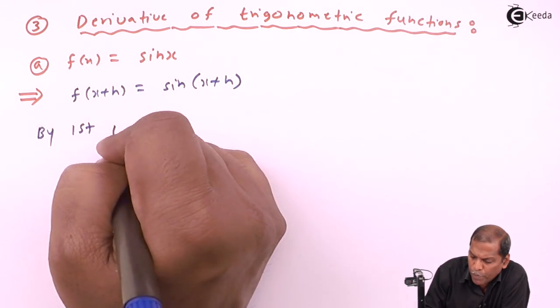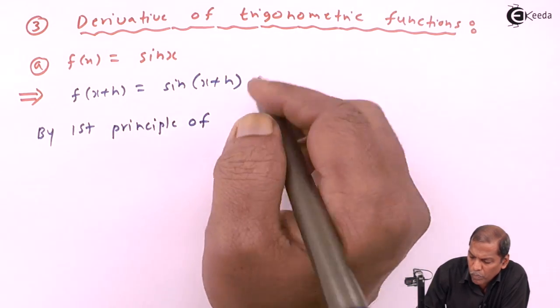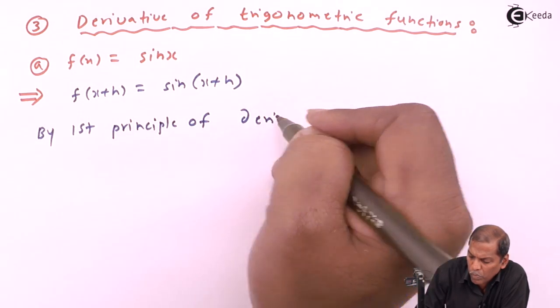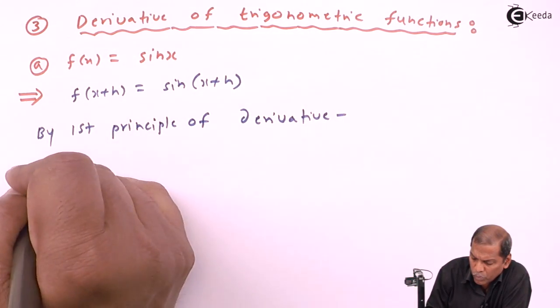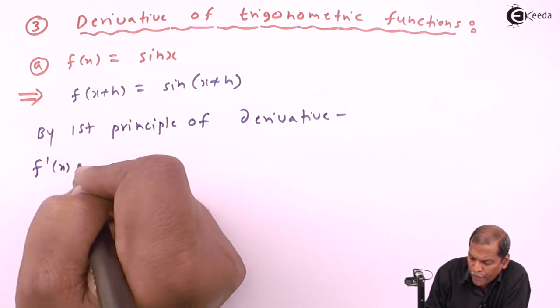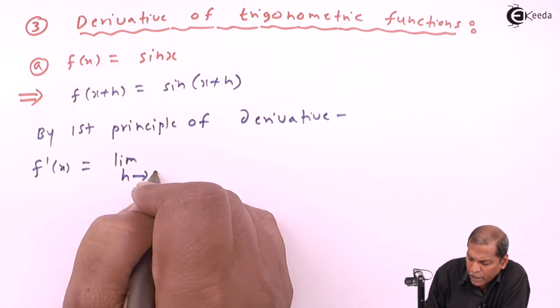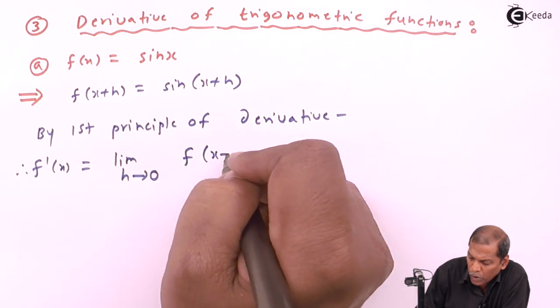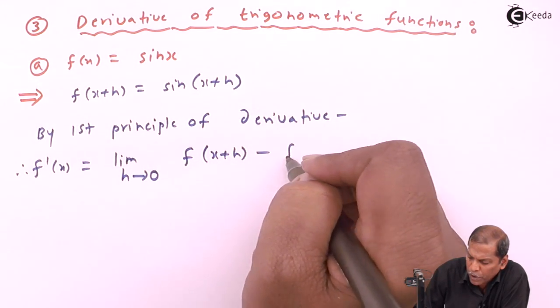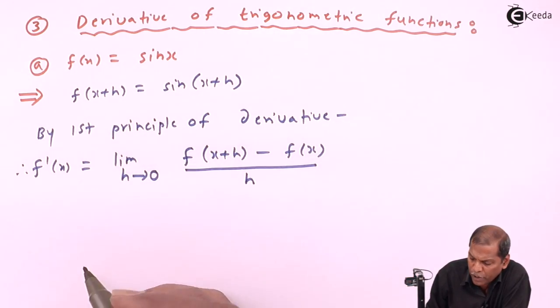By first principle of derivative, f dash x is equal to limit h tends to zero, f(x+h) minus f(x) whole thing divided by h.